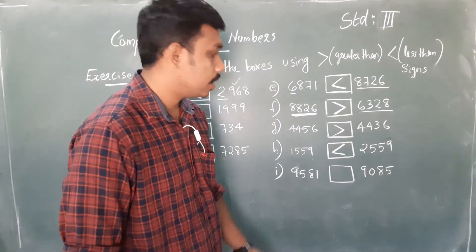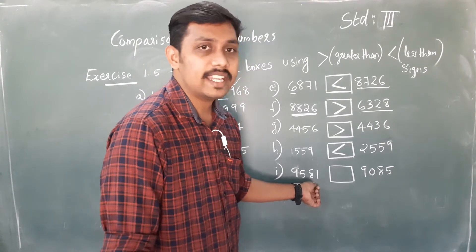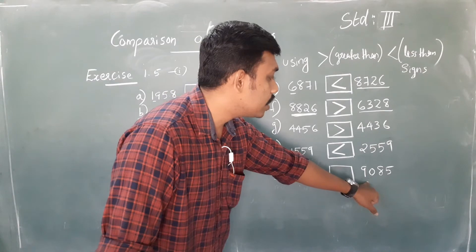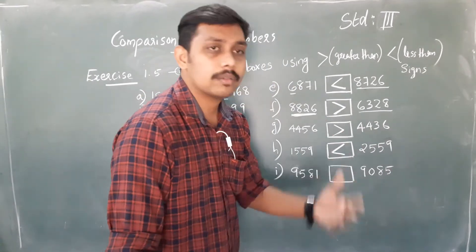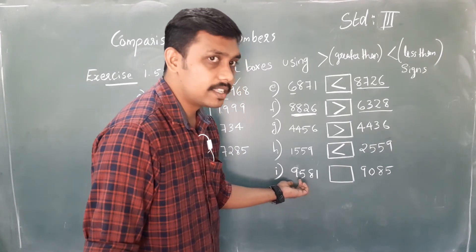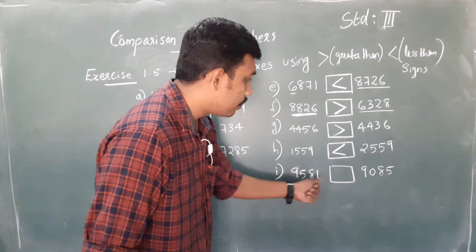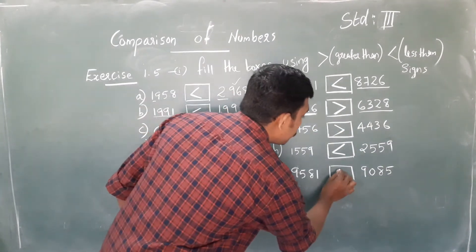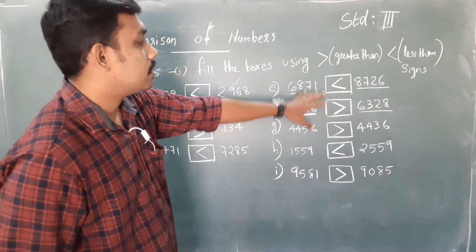Now the last problem: 9581 and 9085. The left extreme digit is the same. But the next digit is 5 here and 0 here. Since 5 is larger than 0, 9581 is the larger number. We represent it like this.